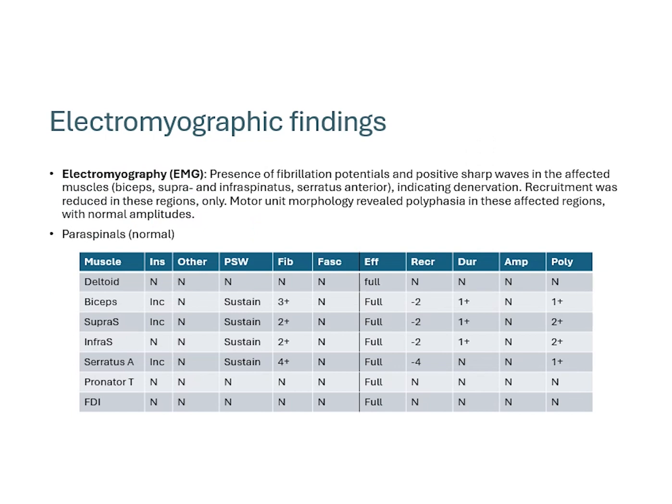On needle EMG testing is really where we found the bulk of the abnormalities, as would be expected. As you can see, we saw florid fibrillation potentials and sharp waves in a variety of the affected regions, including the biceps, supra- and infraspinatus, and the serratus. We also saw that recruitment was down quite substantially in the serratus anterior. Motor unit morphology, outside of some early polyphasia, was largely normal — all indicating fairly recent acute to subacute denervation with some early re-innervation findings.